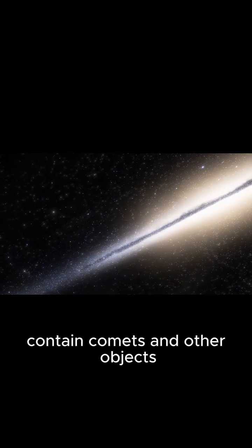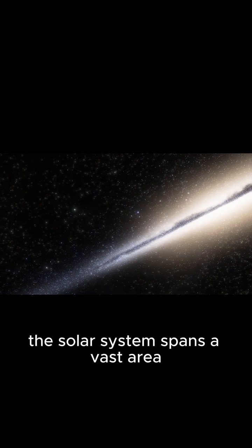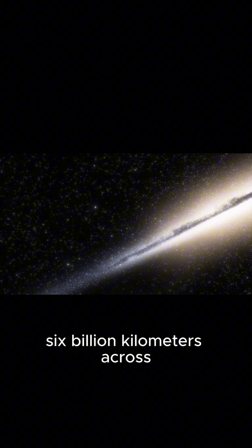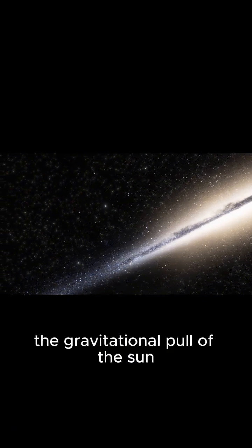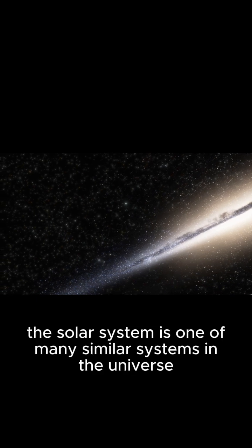The solar system spans a vast area, approximately 287.46 billion kilometers across. The gravitational pull of the sun keeps the planets and other objects in orbit.